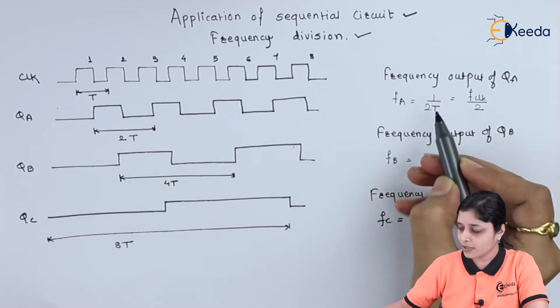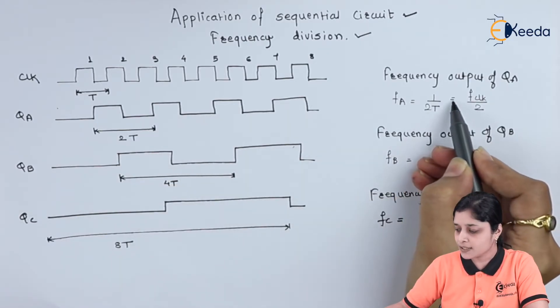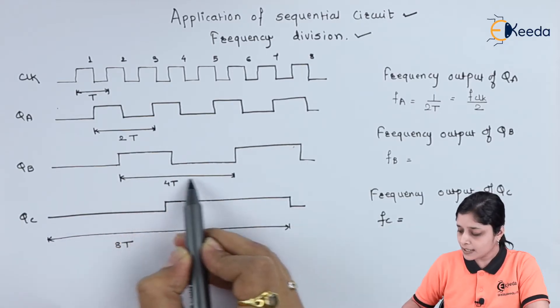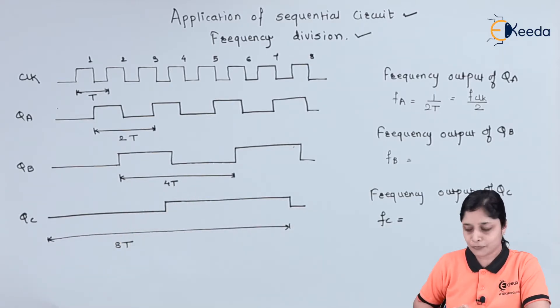Now we can calculate the frequency of QB, that is output of flip-flop B. Here we are getting according to the timing diagram 4T.